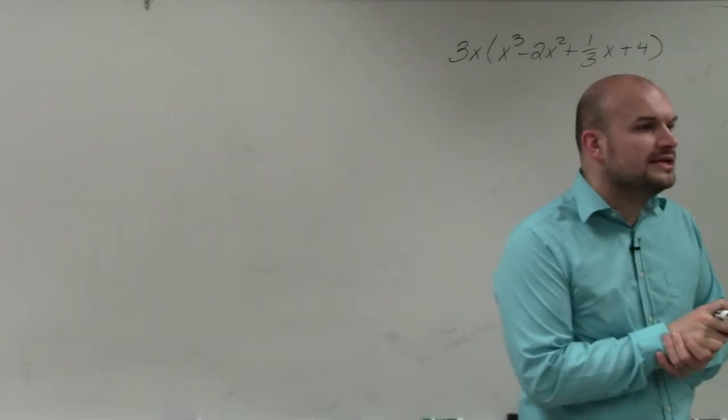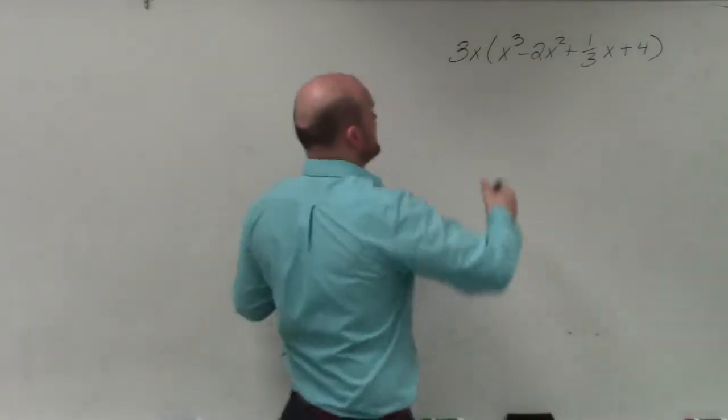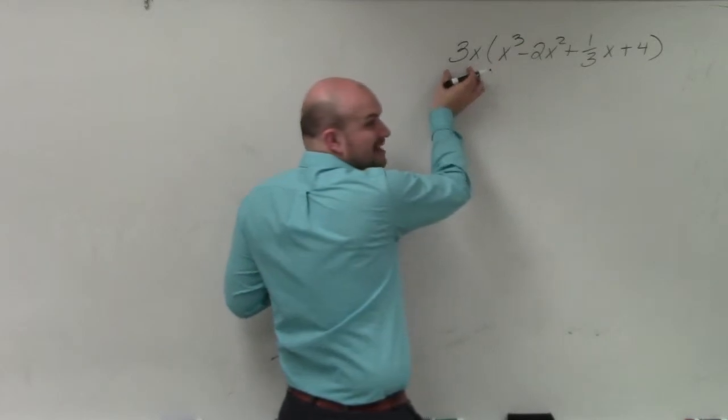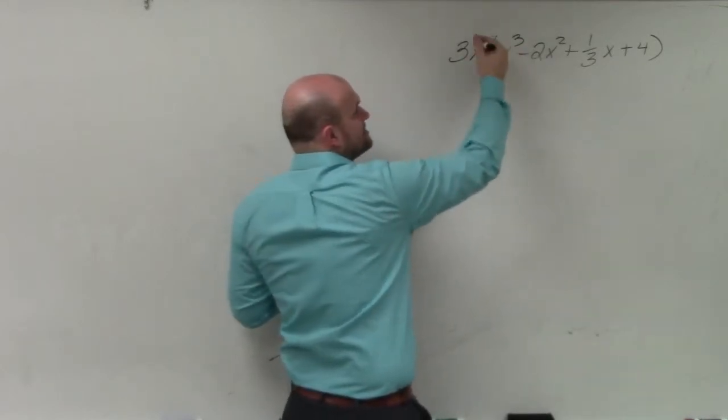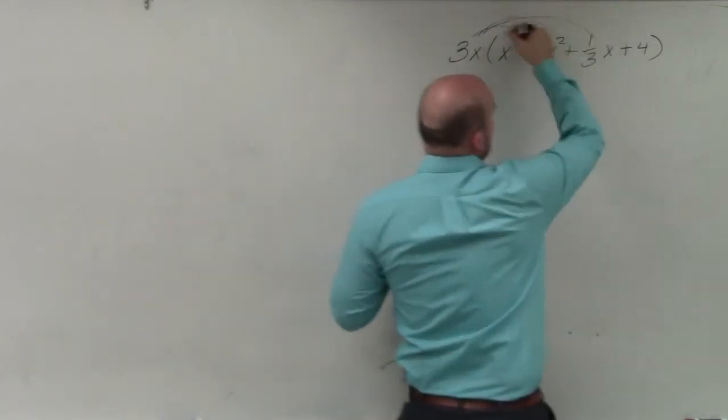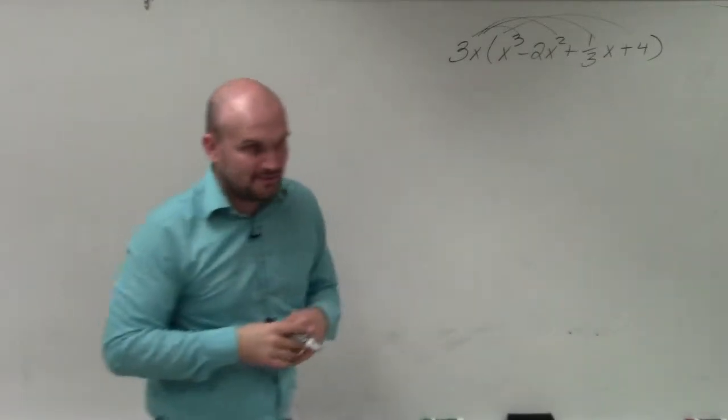So when we're looking into doing distributive property, the basic thing that we're doing is any time we have a term outside of our parentheses, we need to make sure that we multiply that times everything inside of that parentheses.